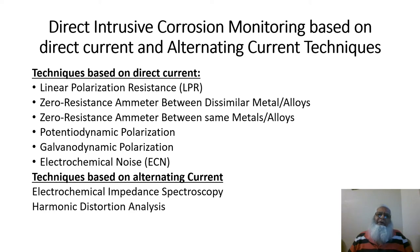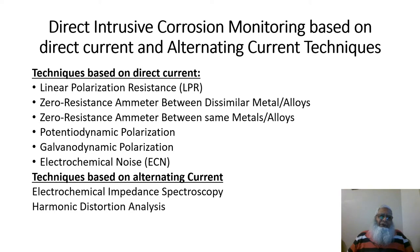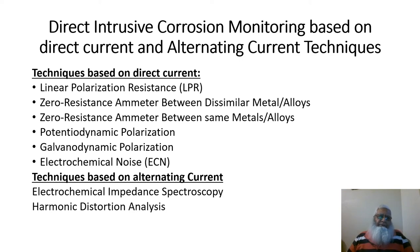This slide shows techniques based on direct current and alternating current in common use for direct intrusive corrosion monitoring in oil and gas facilities. DC-based techniques include linear polarization resistance probes, zero resistance ammeter between dissimilar metals and alloys, zero resistance ammeter between same metals and alloys, potentiodynamic polarization, galvanodynamic polarization, and electrochemical noise. AC-based techniques include electrochemical impedance spectroscopy and harmonic distortion analysis.